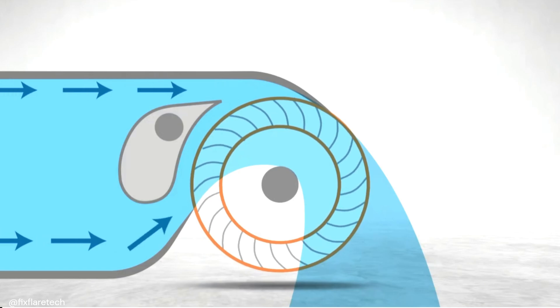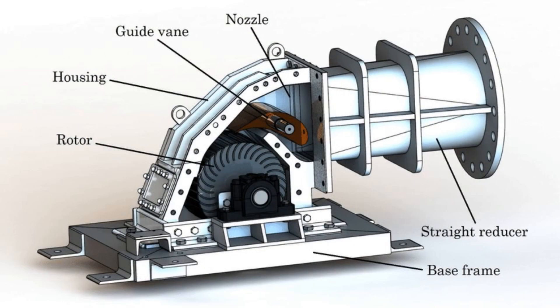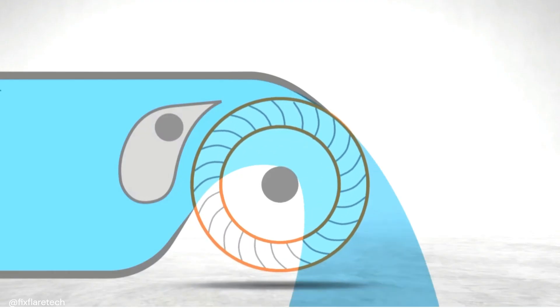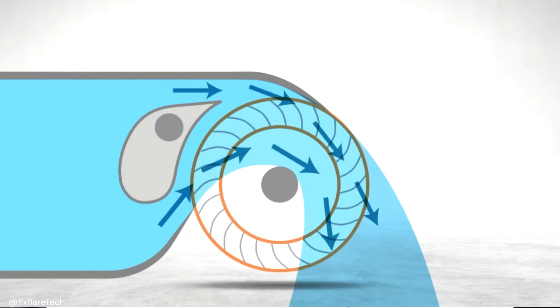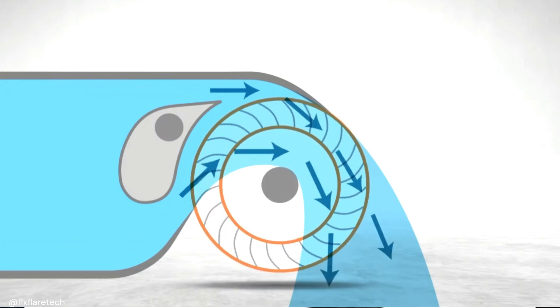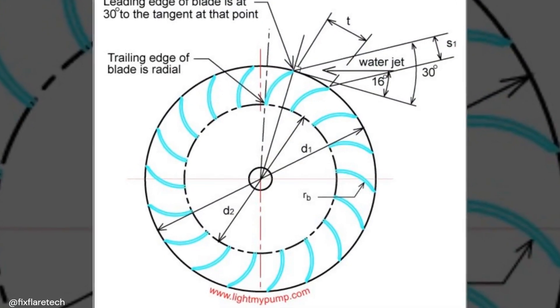Surrounding the runner is the casing, a conically shaped structure designed to direct water towards the runner blades. Its narrowing cross-section as it approaches the runner increases the water's velocity, thereby maximizing the turbine's efficiency.